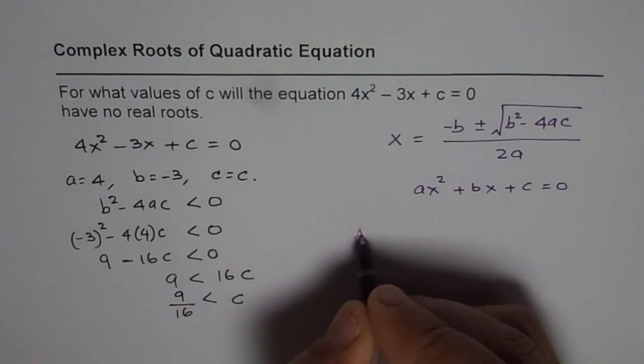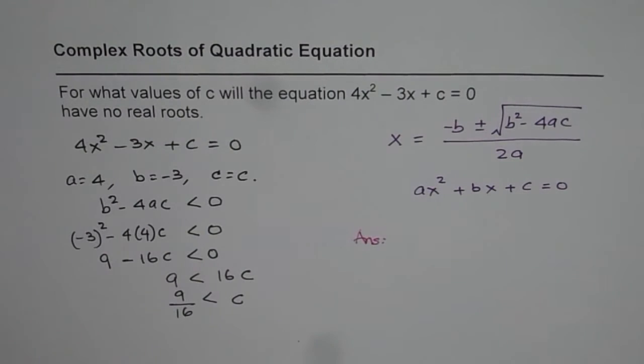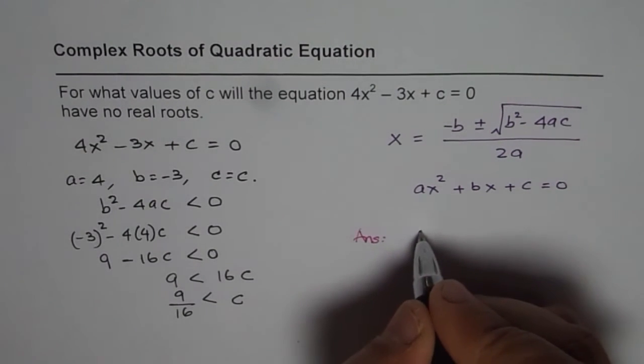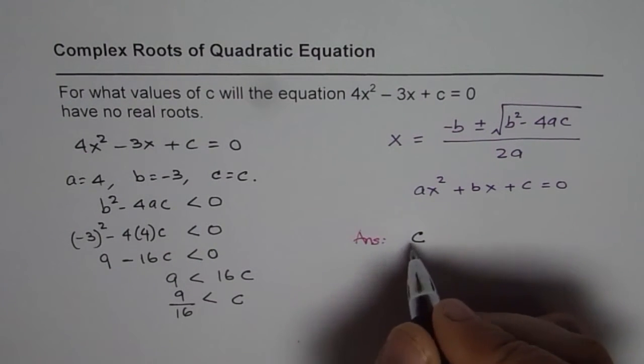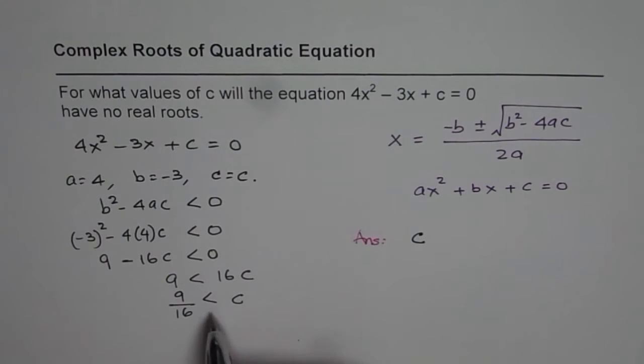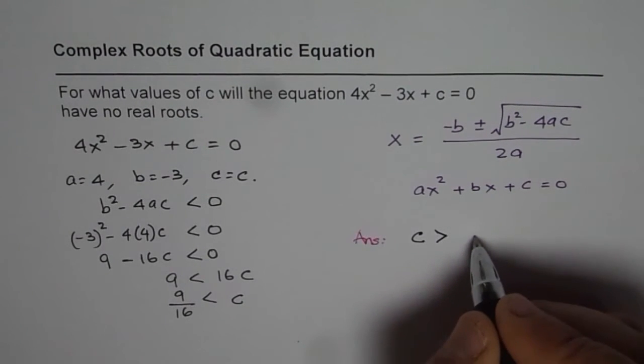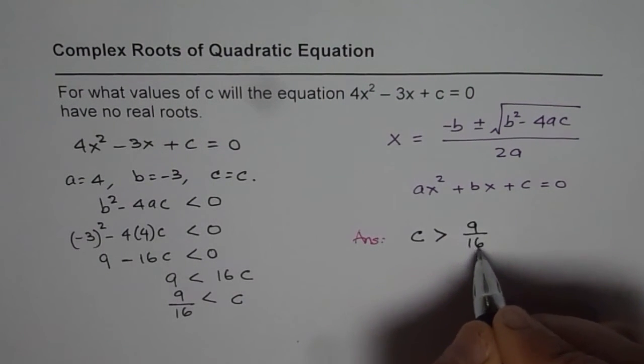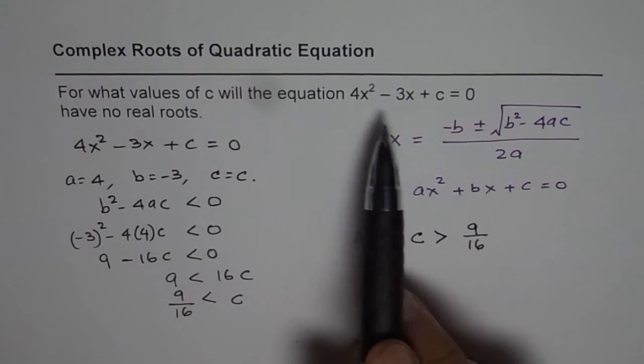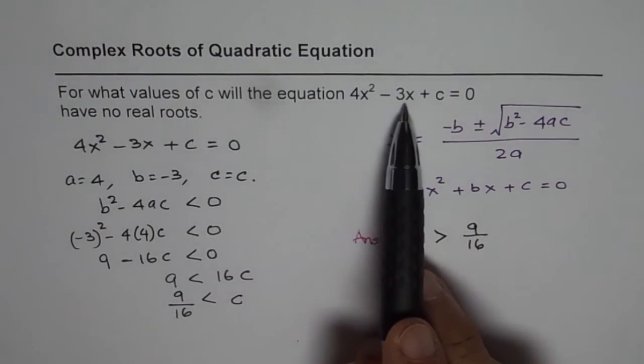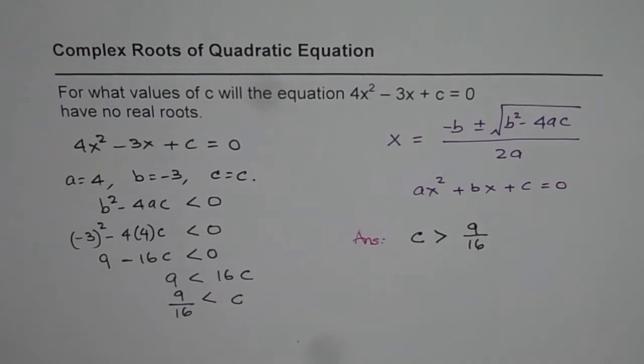So the answer is c is... I mean c is greater than... let me write this: c > 9/16 for the quadratic equation 4x² - 3x + c = 0 to have no real root. So c should be greater than 9/16 for no real roots. Thank you.